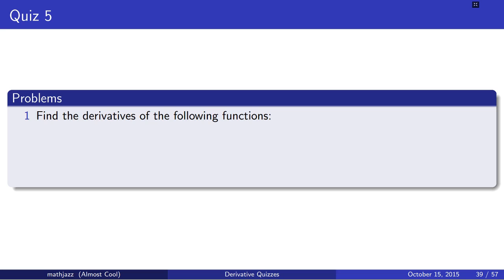Question 1. Find the derivatives of the following functions. a. f of x equals e to the tangent squared x. b. g of x equals cotangent of tangent of x. c.